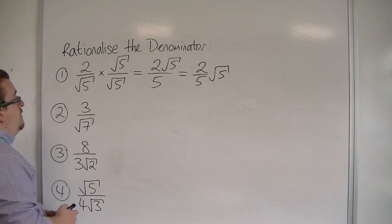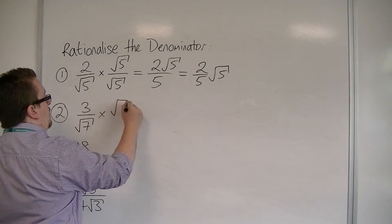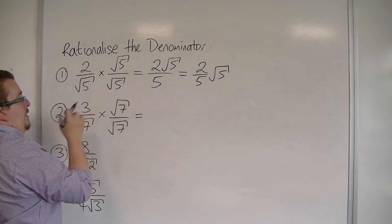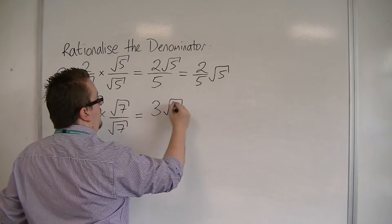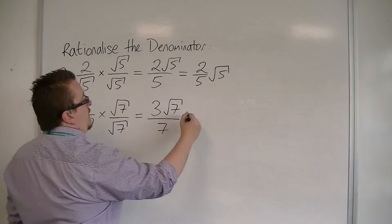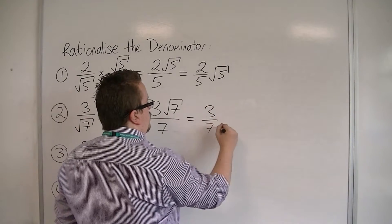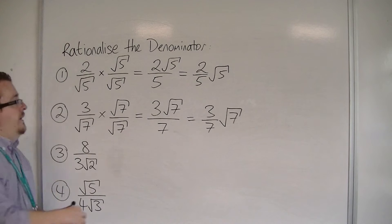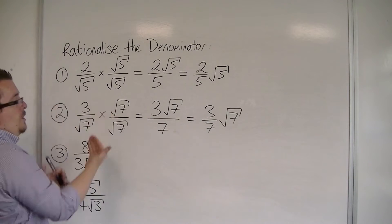Number 2, 3 over root 7. Doing it a similar way, times top and bottom by root 7 this time. I get 3 times root 7, so 3 root 7, over root 7 times root 7, which is just 7. So I get 3 sevenths root 7, and that is exactly the same as just 3 over root 7.